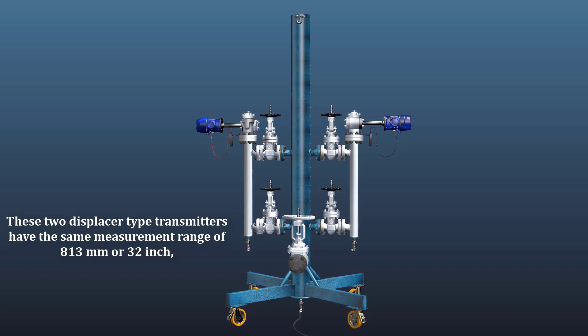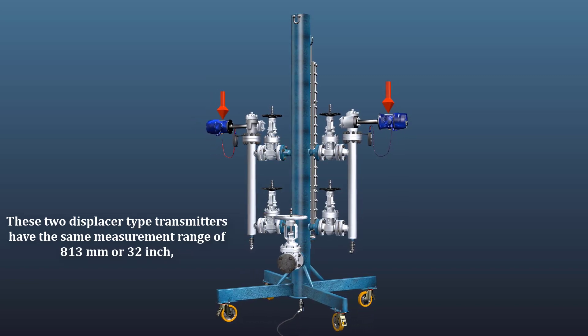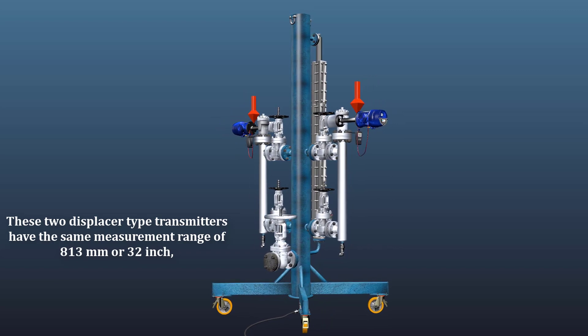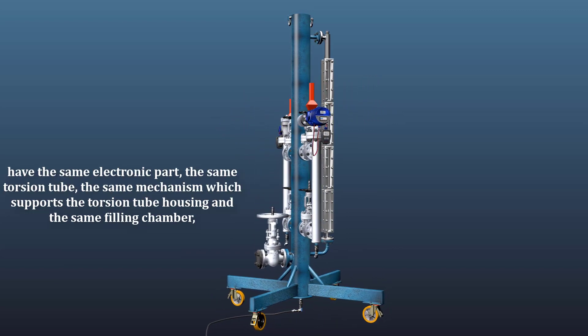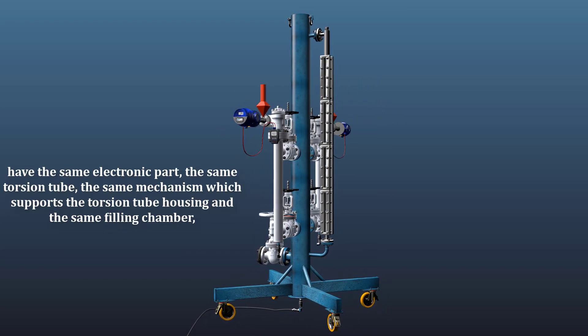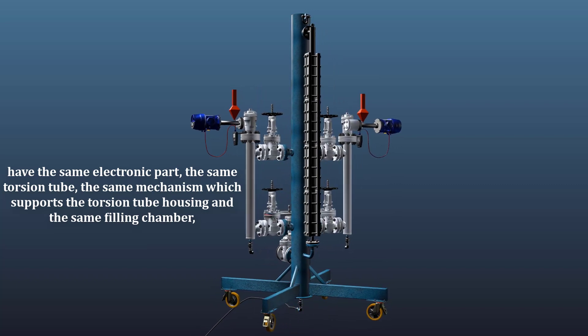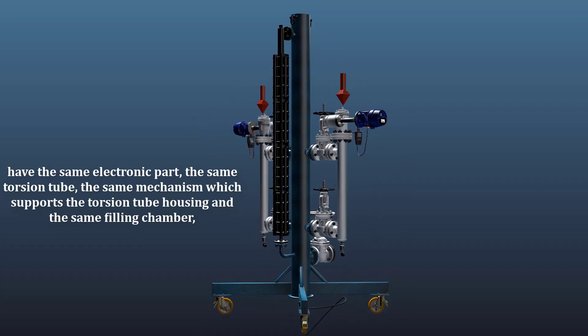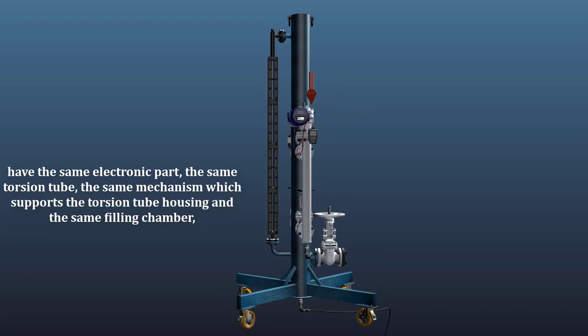These two displacer type transmitters have the same measurement range of 813 millimeters or 32 inches, have the same electronic part, the same torsion tube, the same mechanism which supports the torsion tube housing, and the same filling chamber.